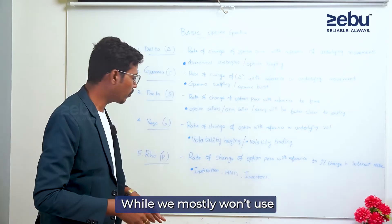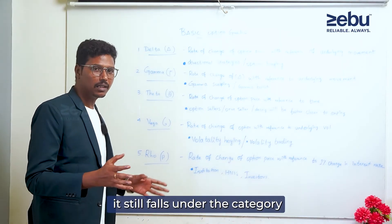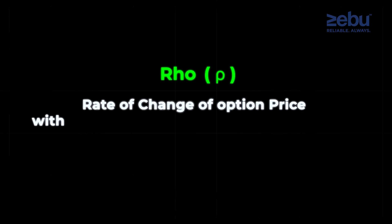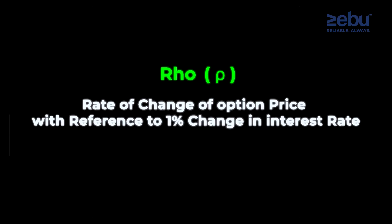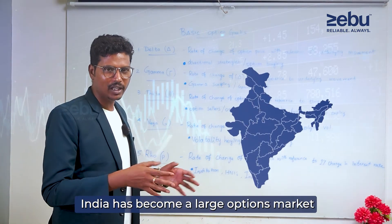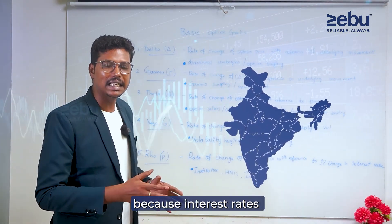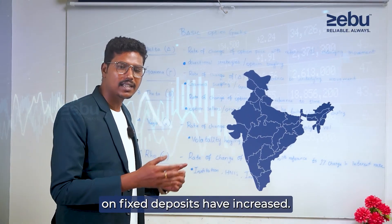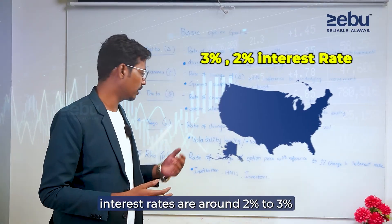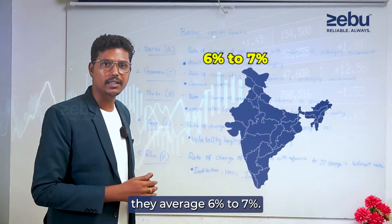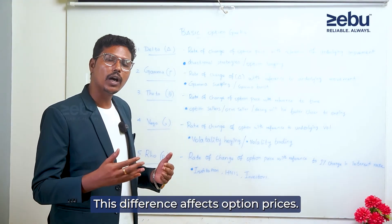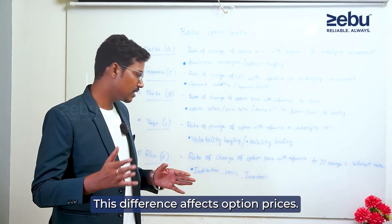The last one — Rho. Who can use intraday trading? Still, the basic option definition: rate of change of option price with reference to a 1% change in interest rate. You can say the option price is based on the interest rate. In India, the interest rate is around 6–7% on average, compared to the US where it is 3% or 2%. So there is a calculation, and then the option price is determined.